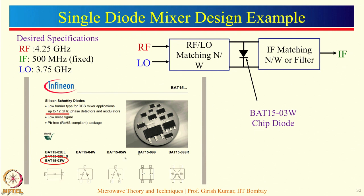For this example, we are going to skip the RF and LO isolation part for illustration purposes, and focus more on the RF matching and IF filtering part. We are going to use a simulation software named Microwave Office by National Instruments, also called AWR.